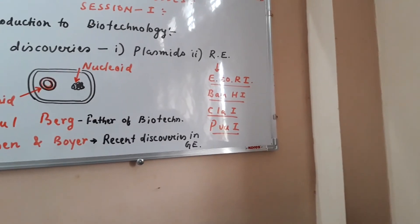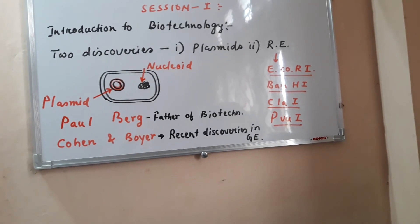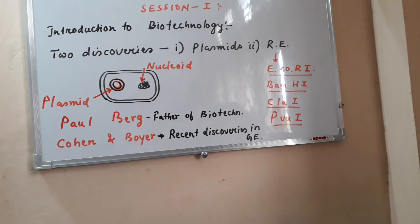Two key discoveries are plasmids and restriction endonucleases, which are very important for the development of modern biotechnology and genetic engineering. There are three requirements for a genetic engineering experiment: enzymes, cloning vectors, and a suitable competent host for gene transfer.